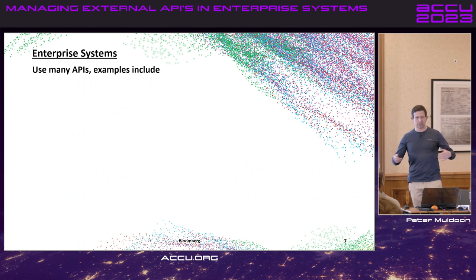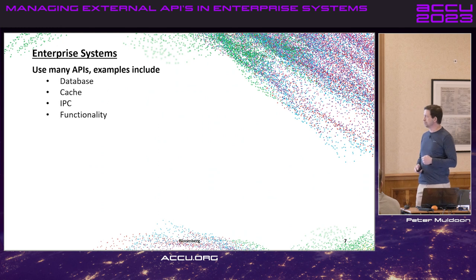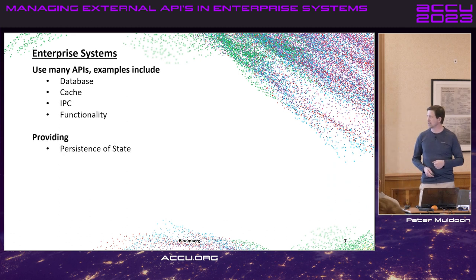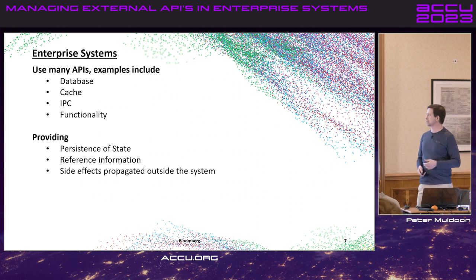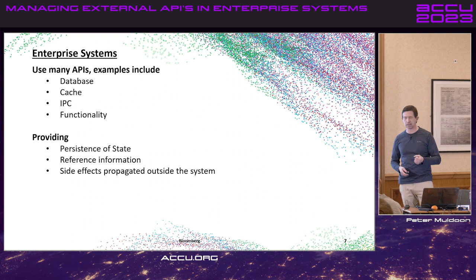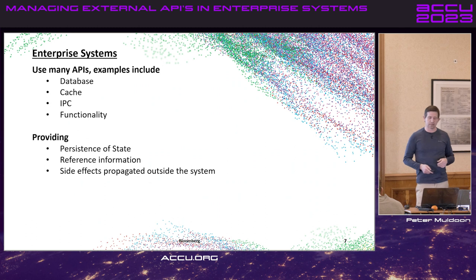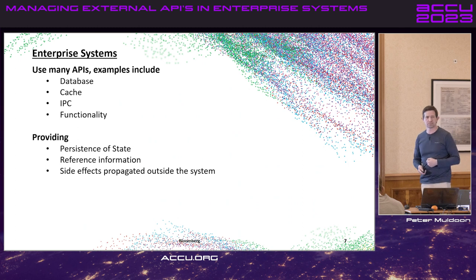When you put a large enterprise system together, you don't want to write every single piece of code yourself. You drag in blocks of functionality from other libraries and APIs — usually something for database, cache, and inter-process communication. These give you persistence of state, rapid access to cached data, and the ability to get data from other systems or spread side effects outside your current system. And for functionality like matrix multiplication, you just take a pre-existing API.